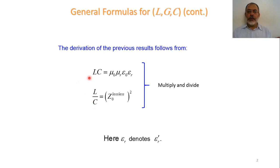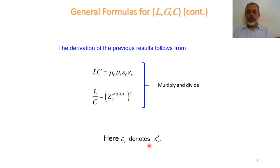This is based on L·C = μ₀μ_r·ε₀ε_r, and the characteristic impedance of the lossless transmission line equals √(L/C), so L/C = Z₀_lossless². Here ε_r refers to ε_r', the real part of the relative permittivity.